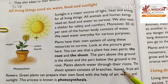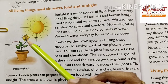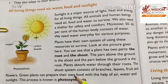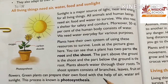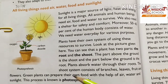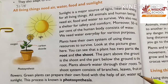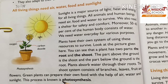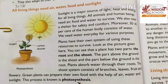Leaves, fruits and flowers are part of the shoot system. Green plants can prepare their own food with the help of air, water and sunlight. This process is known as photosynthesis.